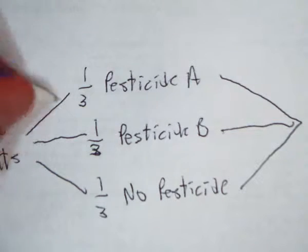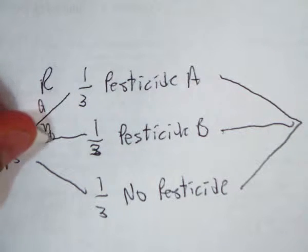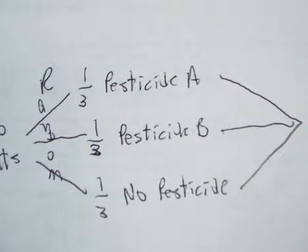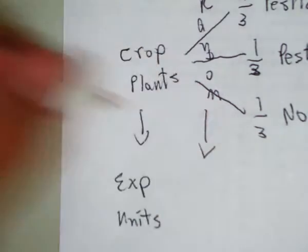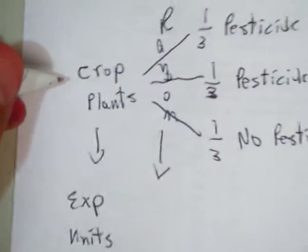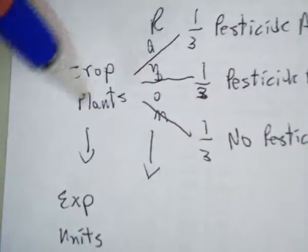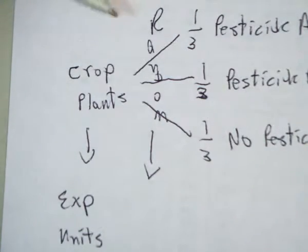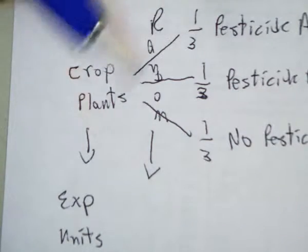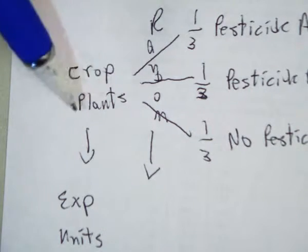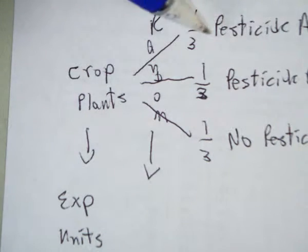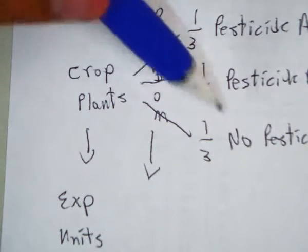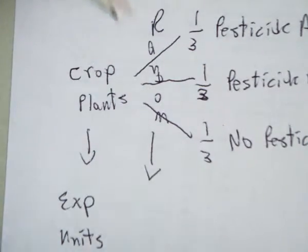We're going to randomly assign here. These are experimental units. How are we going to randomly assign them? We'll give each crop plant a number. Let's say there's 600 of them. We would randomly select the first 200 to get pesticide A, the next 200 get pesticide B, and the last 200 would get no pesticide.